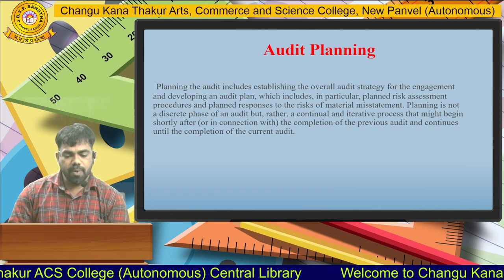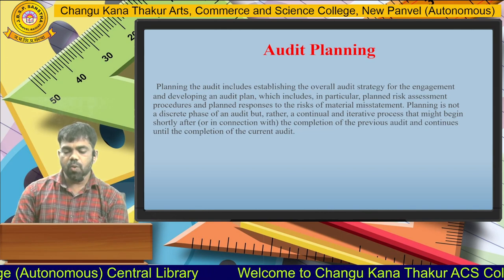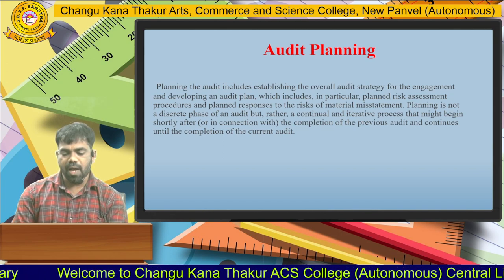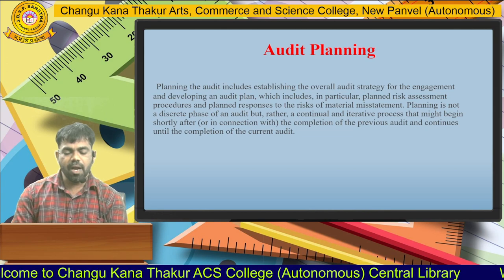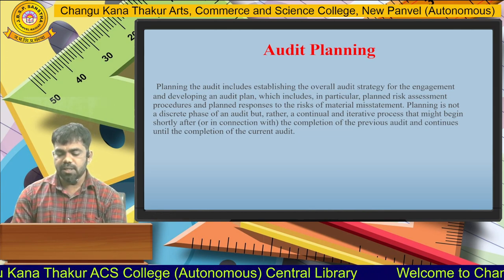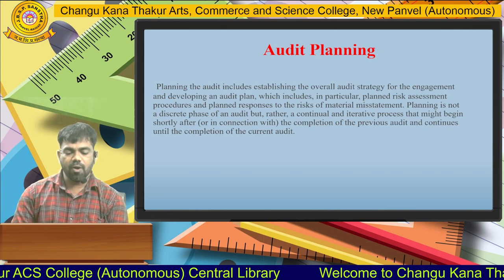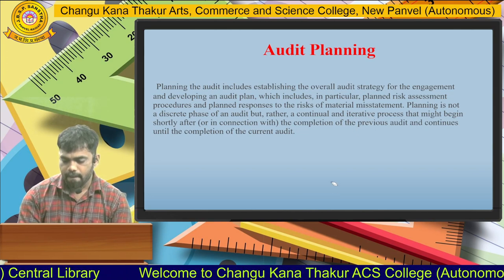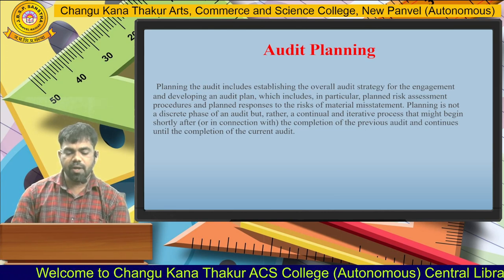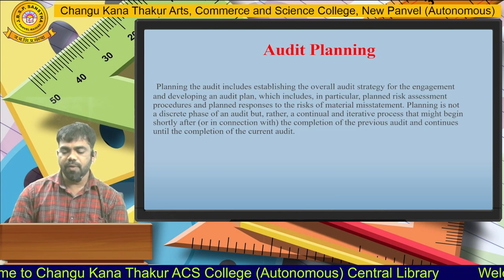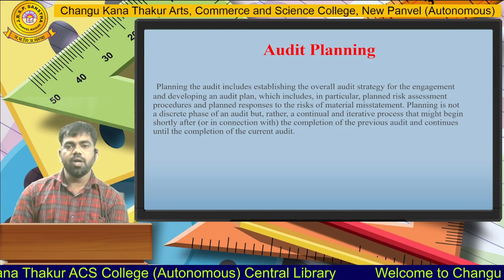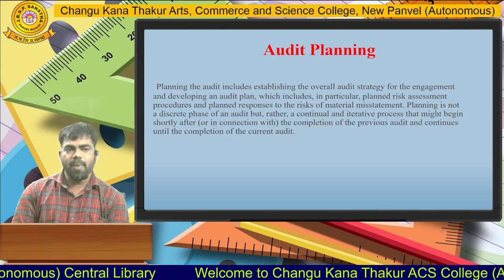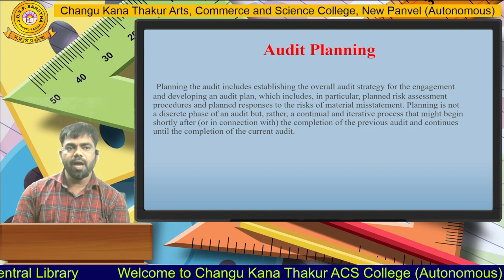Audit planning — the meaning. The audit planning includes establishing the overall audit strategy for the engagement and developing an audit plan, which includes in particular planned risk assessment procedures and planned responses to the risk of material misstatements. Planning is not a discrete phase of an audit but rather a continual and iterative process that might begin shortly after, or in connection with, the completion of the previous audit and continues until the completion of the current audit.